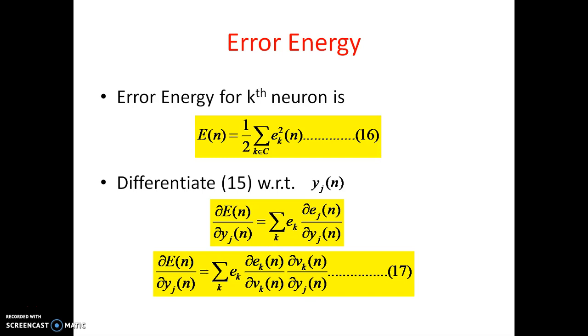So here in the above equation dou Ej of N is not there and that is dou E k of N. So please correct it. That is dou E k of N. We don't get the error from jth neuron. We will get the error from kth neuron only. That you need to correct it. This is named as 17.